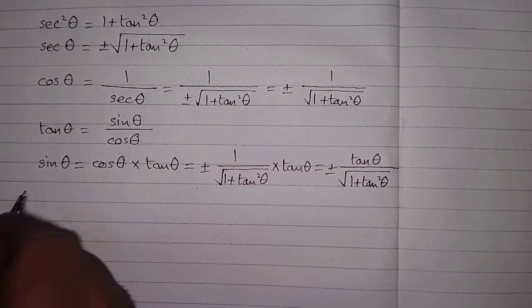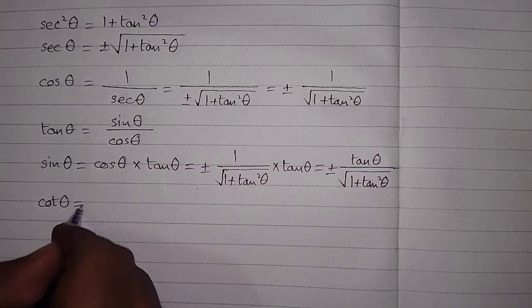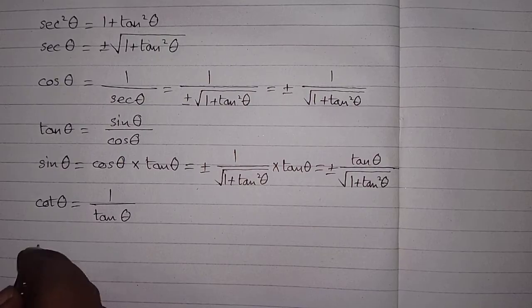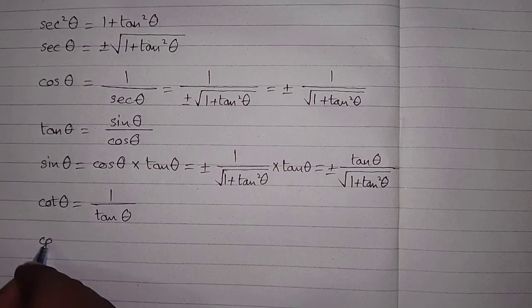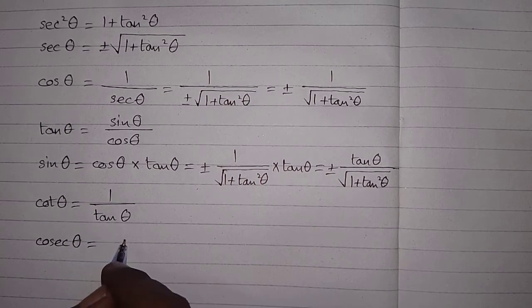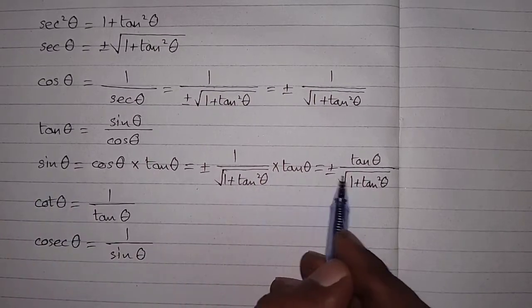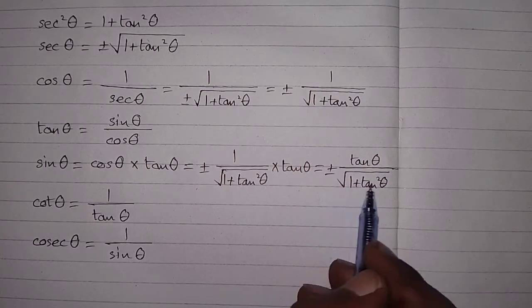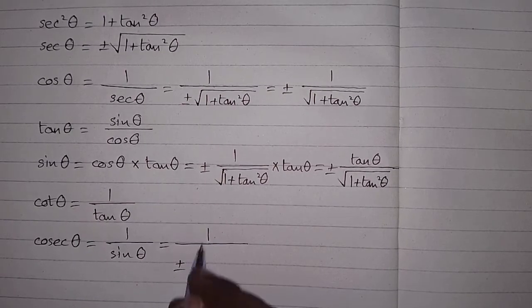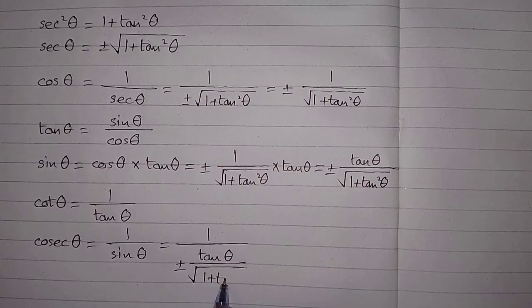Now after sine theta, we can find the value of cot theta, and cot theta is equal to 1 upon tan theta. Then after cot theta, we can find the value of cosec theta, so we have 1 upon sine theta. And sine theta is equal to plus or minus tan theta upon square root of 1 plus tan squared theta, so we can put this value over here, which is plus or minus 1 upon plus or minus tan theta upon square root of 1 plus tan squared theta.